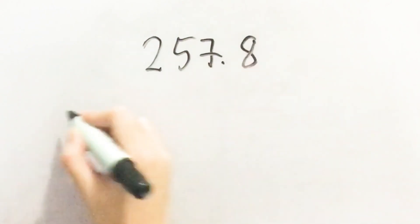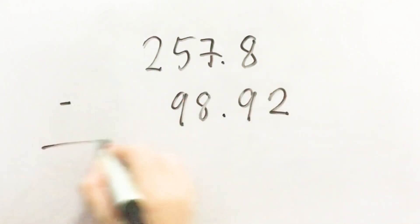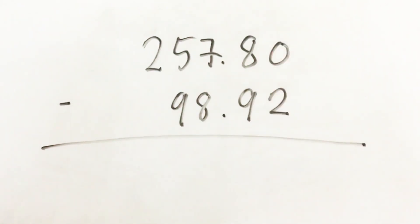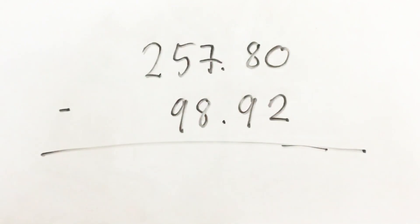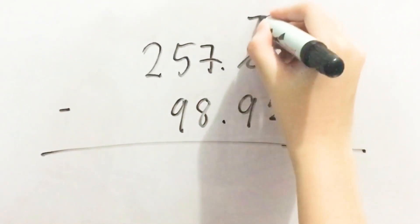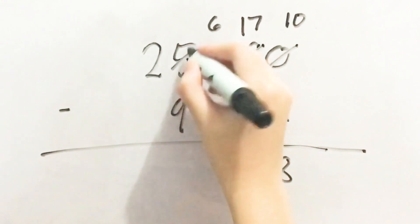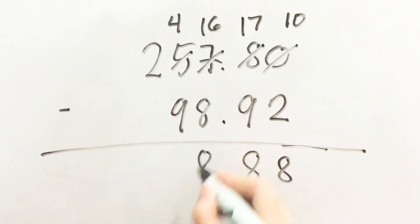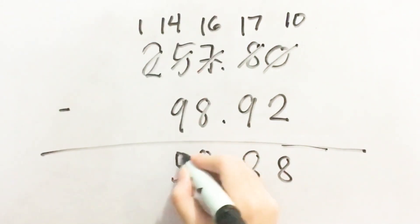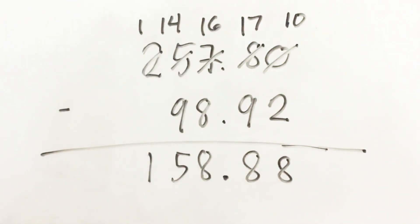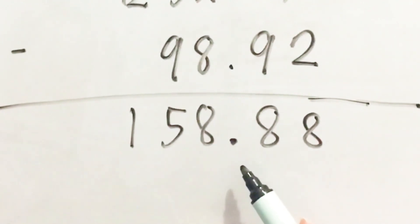Now, can you try answering this problem? Find the difference between two hundred fifty-seven and eight tenths and ninety-eight and ninety-two hundredths. Fantastic! The difference of these decimal numbers is one hundred fifty-eight and eighty-eight hundredths.